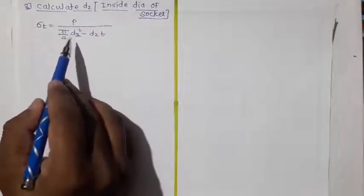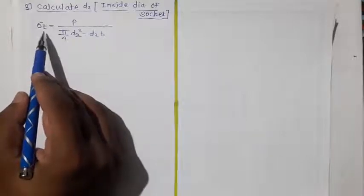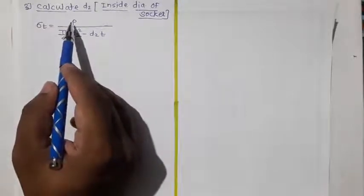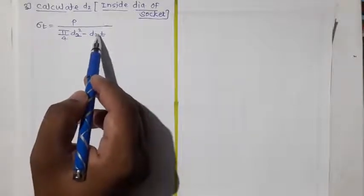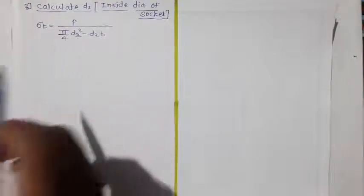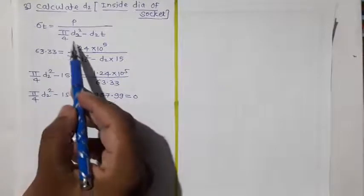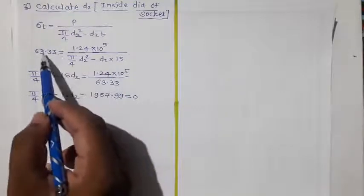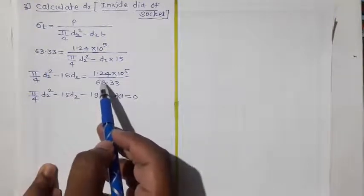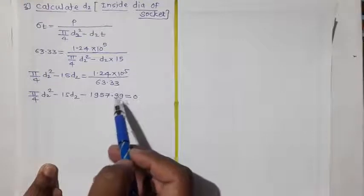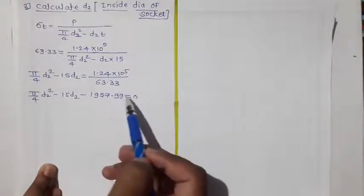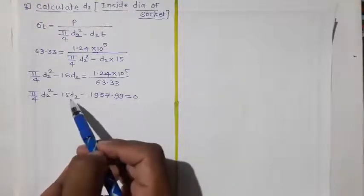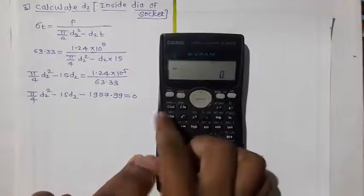Here I have written the equation from step number 3 to calculate D2. Putting in the value of permissible tensile stress σt = 63.33 N/mm², force P = 1.24 × 10⁵ N, and T = 15mm, we simplify this equation. Taking the denominator to the left-hand side and 63.33 to the denominator gives 1957.99 on the RHS. Taking this to the LHS with a negative sign gives us one quadratic equation in D2.